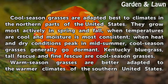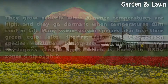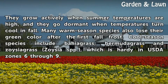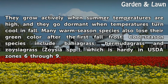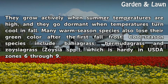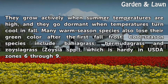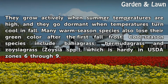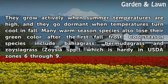Warm season grasses are better adapted to the warmer climates of the southern United States. They grow actively when summer temperatures are high, and they go dormant when temperatures turn cool in fall. Many warm season species also lose their green color after the first fall frost. Warm season species include Bahia Grass, Bermuda Grass, and Zoysia Grass (Zoysia spp.), which is hardy in USDA Zones 6 through 9.